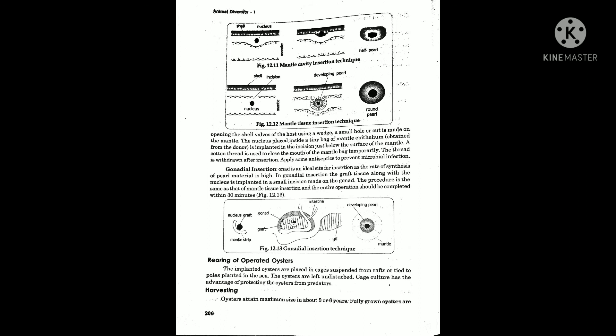The entire operation should be completed within 30 minutes. After implantation, the oysters are placed in cages which are suspended from ropes or tied under poles planted in the sea. The oysters are left undisturbed. Cage culture has the advantage of protecting the oysters from predators.